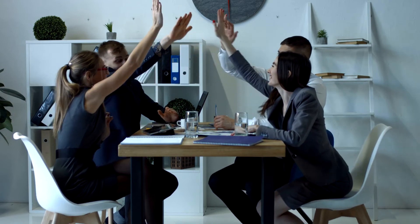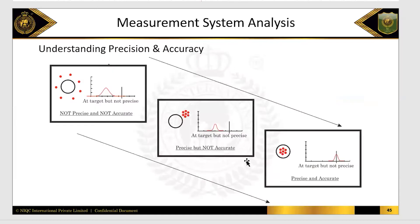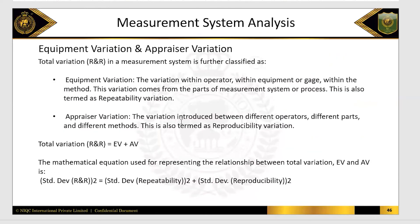These are a few concepts in MSA. Here you see too much variation — not precise, not accurate. Here it's precise but not accurate. And this is how your measurement system should be — accurate and precise.